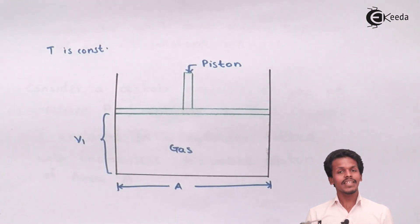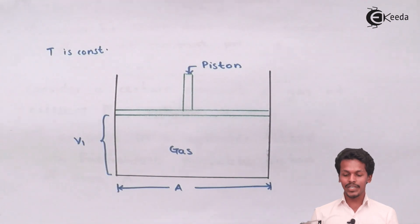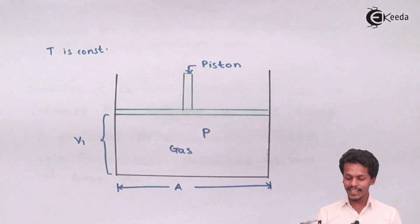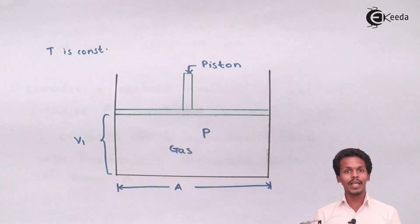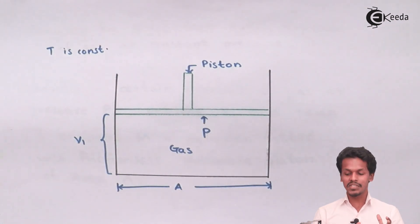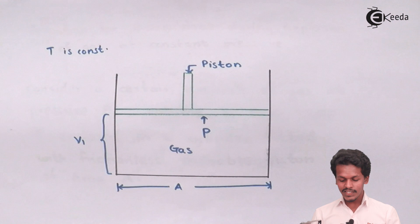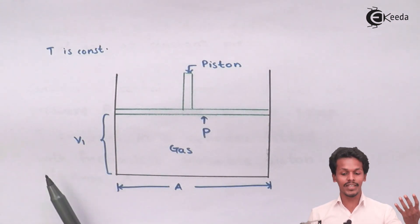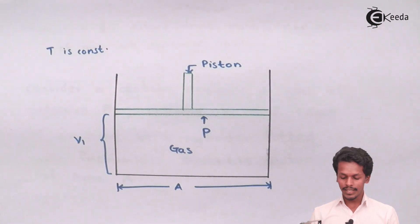The gas is enclosed in a cylinder with a frictionless piston. The gas will have a particular pressure, so the pressure of the gas inside the cylinder is P, and the piston is above it. The piston tries to keep the volume constant at V1. So at normal conditions, when the gas is not expanding, the gas has a pressure of P, a volume of V1, and the cylinder has cross-section area A, with temperature maintained constant.